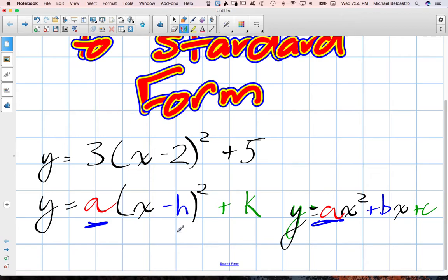A here is going to be the same. In vertex, in standard, even in factor form, your A term is always the same. H is not B, hence why I gave them different letters. K is not C. But we're going to work on going from vertex to standard, and that's called essentially expanding.